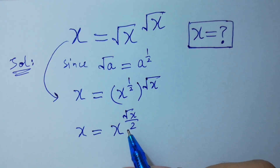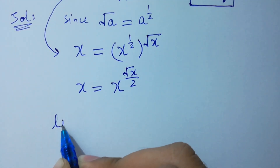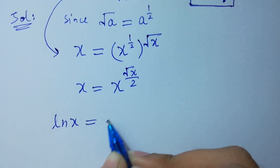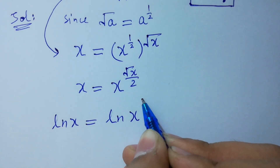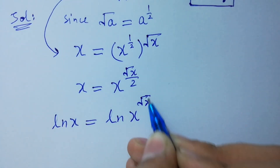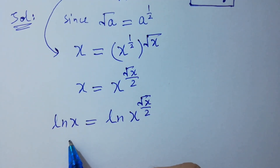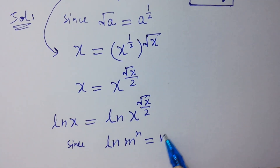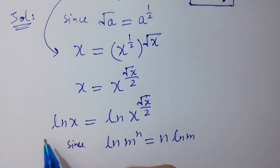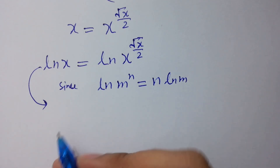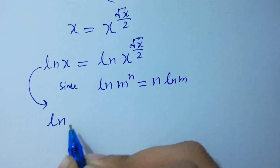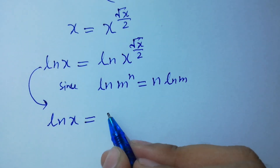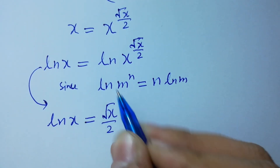Take natural log on both sides to solve this faster. So ln x equals ln of x to the power square root of x over 2. Since ln(m^n) equals n·ln(m), it can be written as ln x equals square root of x over 2 times ln x.